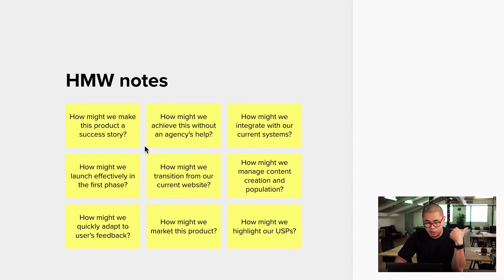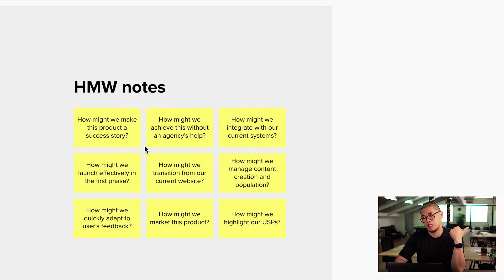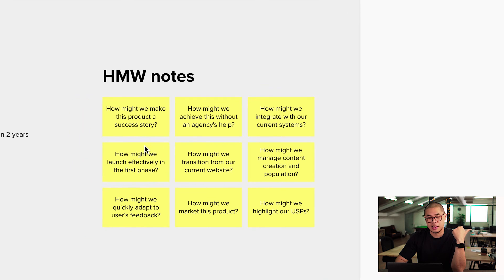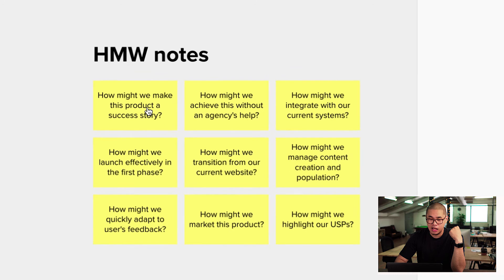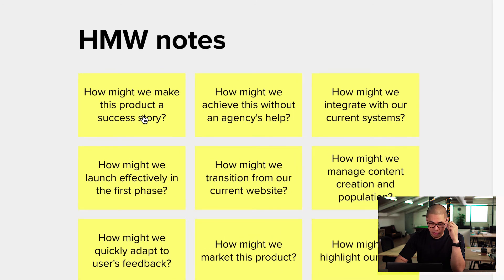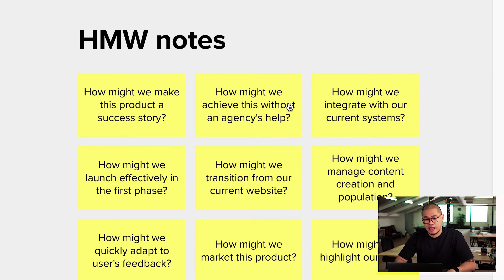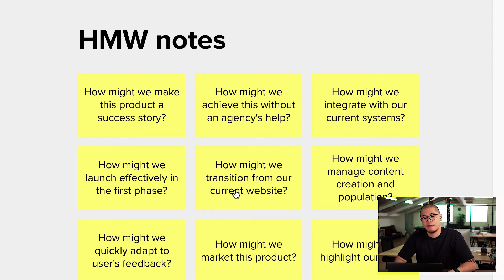All right, so here we've got a few notes. In a real exercise you'd have way more than this, but I've written nine as examples. Let me read through some of them: 'How might we make this product a success story?' 'How might we achieve this without an agency's help?' 'How might we integrate our current systems?' 'How might we launch effectively in the first phase?' They're all very reasonable types of questions.